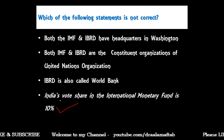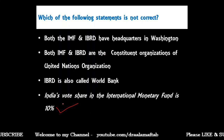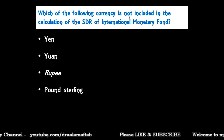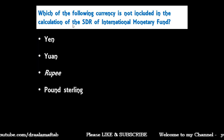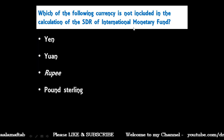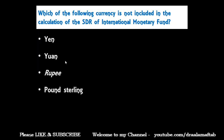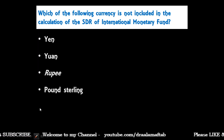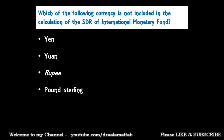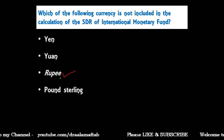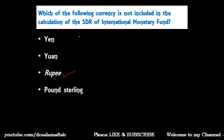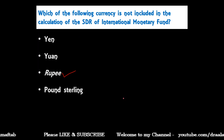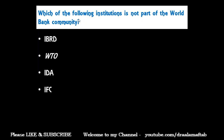Next question: which of the following currencies is not included in the calculation of the SDR of the IMF — yen, yuan, rupee, or pound sterling? The correct answer is rupee. The rupee is not included in the calculation of SDR value; yen, yuan, and pound sterling are included.